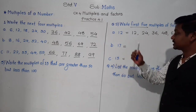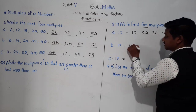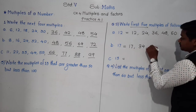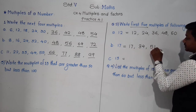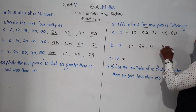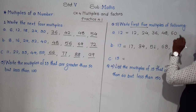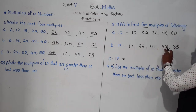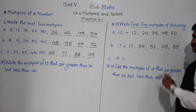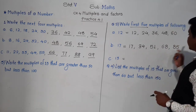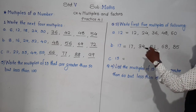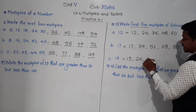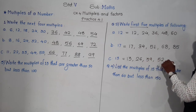First 5 multiples of 17: 17×1=17, 17×2=34, 17×3=51, 17×4=68, and 17×5=85. First 5 multiples of 13: 13×1=13, 13×2=26, 13×3=39, 13×4=52, and 13×5=65.